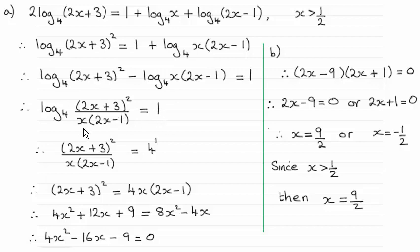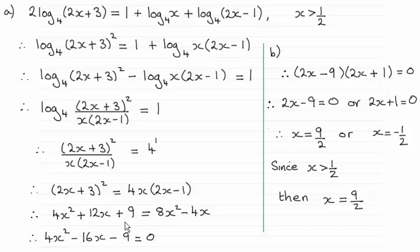Now I remove the log — I anti-log by saying that this value here is equal to the base 4 raised to the power 1. You should be familiar with that rule. Then it's just a question of rearranging this: multiply both sides by x times 2x minus 1, expand the bracket here and the bracket there, and rearrange the terms to give the quadratic equation that we had to show.